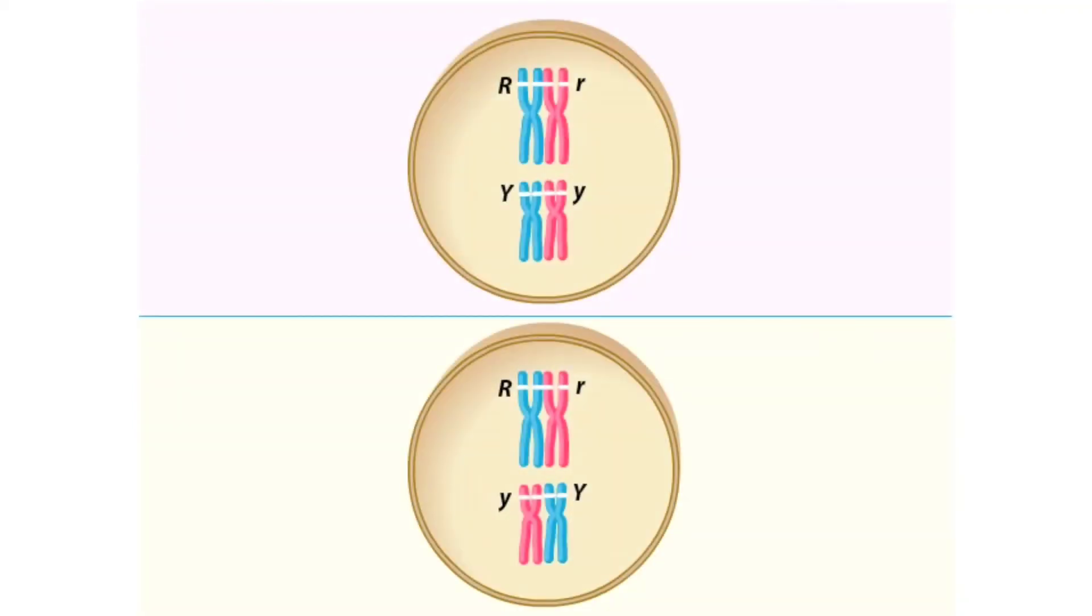In pea plants, it turns out that the seed-shaped gene, R, is located on chromosome pair 7, while the seed-color gene, Y, sits on chromosome pair 1.